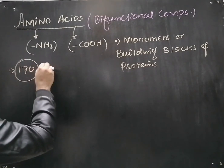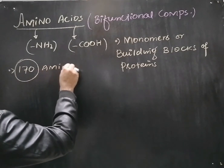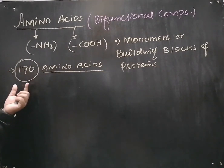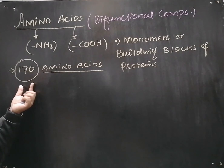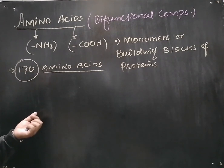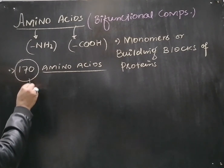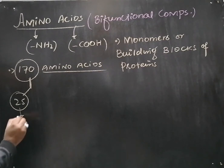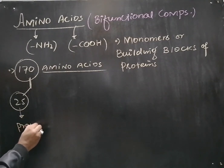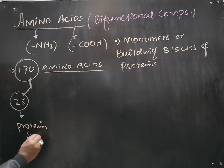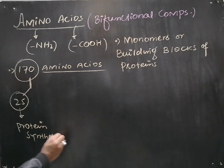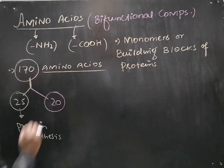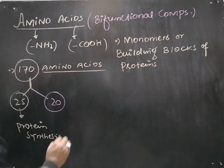170 amino acids have been discovered so far. This number 170 includes both natural as well as synthetic amino acids. Out of these 170 amino acids, 25 amino acids are found to be involved in protein synthesis. But keep in mind that most proteins are made up of 20 amino acids.